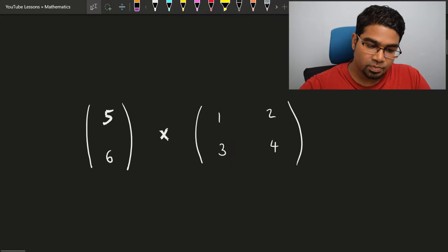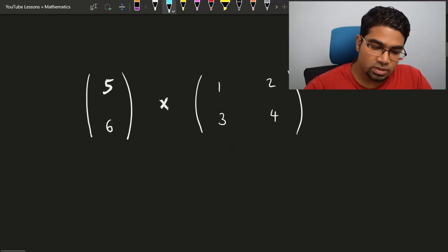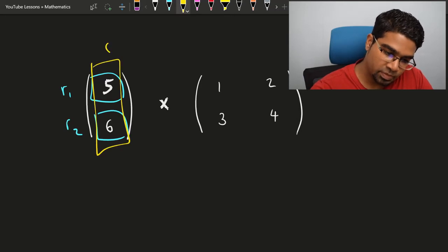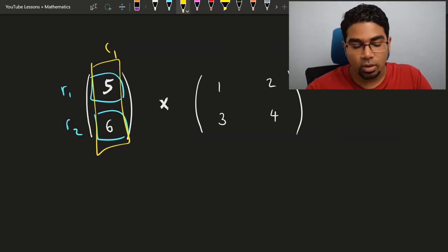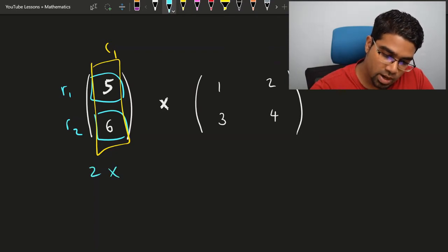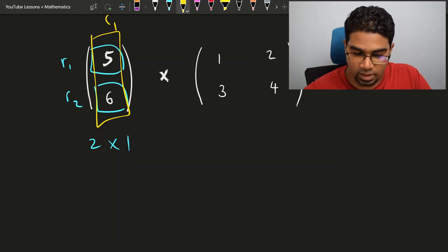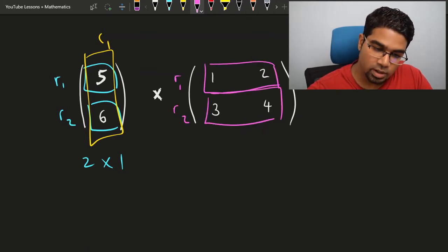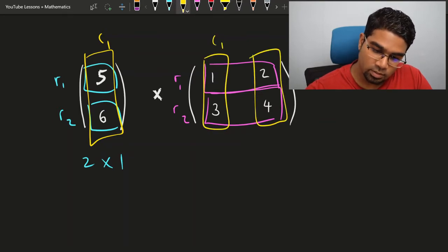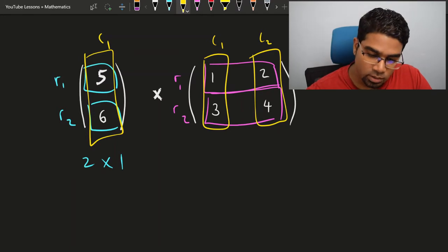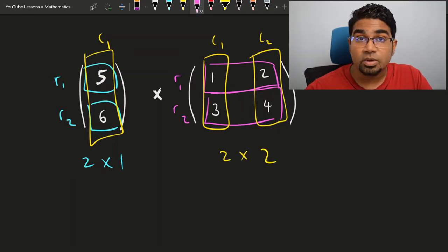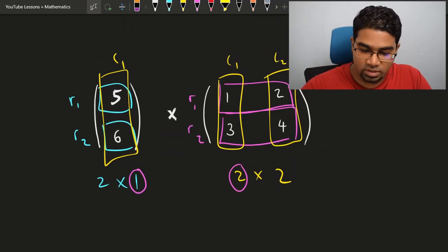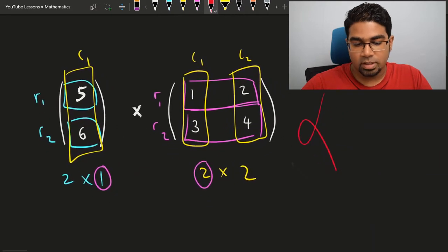Let's look at another example — these two matrices. The first matrix has two rows and one column, so the order is 2 by 1. Now let's look at the second matrix — it has two rows and two columns, making the order 2 by 2. You'll notice the numbers in between are not the same: we have 1 and 2. Therefore these matrices cannot be multiplied.